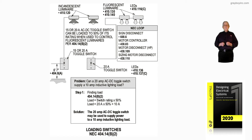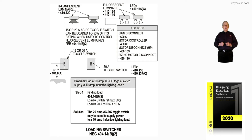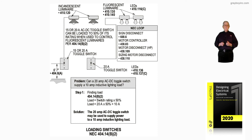We can take the other 50% to supply DC loading, as shown in the illustration. If it's a 20-amp toggle switch with fluorescents and LEDs, classified as inductive loading, that's where the 50% rule applies. To the left, if you're only applying incandescent lighting, a 15 or 20-amp AC-DC toggle switch can be loaded to 100% for DC incandescent type lighting. Figure 11-40 simply deals with loading switches when they're AC-DC rated.